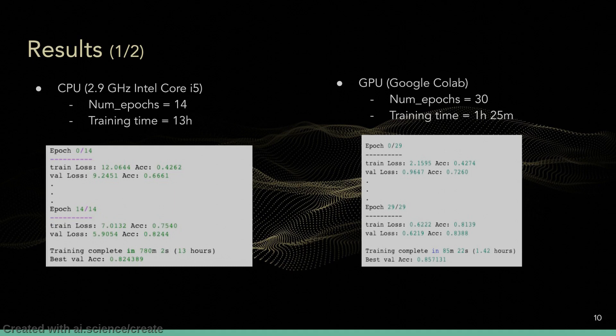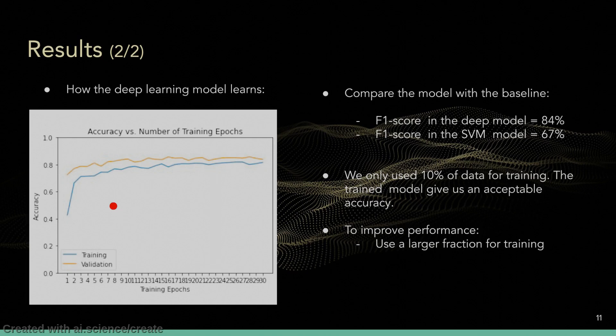This slide shows the training process on CPU versus GPU. The delivered model was trained on GPU in 30 epochs. In this graph, you can see how the model learns over 30 epochs. The final F1 score reaches 84% on the validation set, representing significant progress compared with the baseline model. However, we should note that we only applied 10% of the dataset for training — using a larger fraction might yield even more improvement.